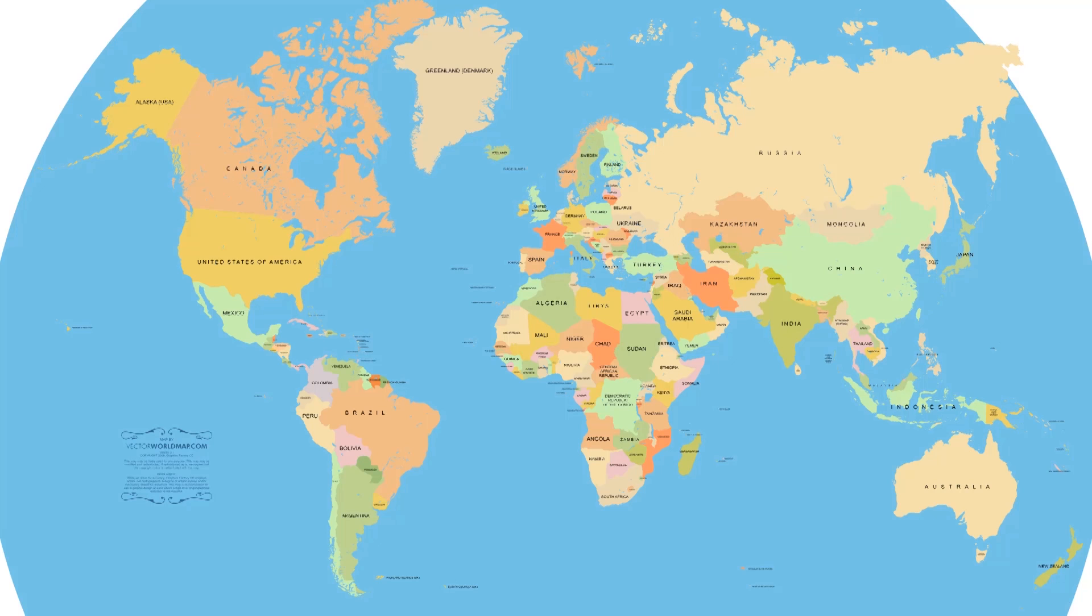It is thought that these different blood groups evolved during several millions of years. One theory says that blood group A came from Europe, B from Asia, and O from South America, and that due to migration all of these have mixed.